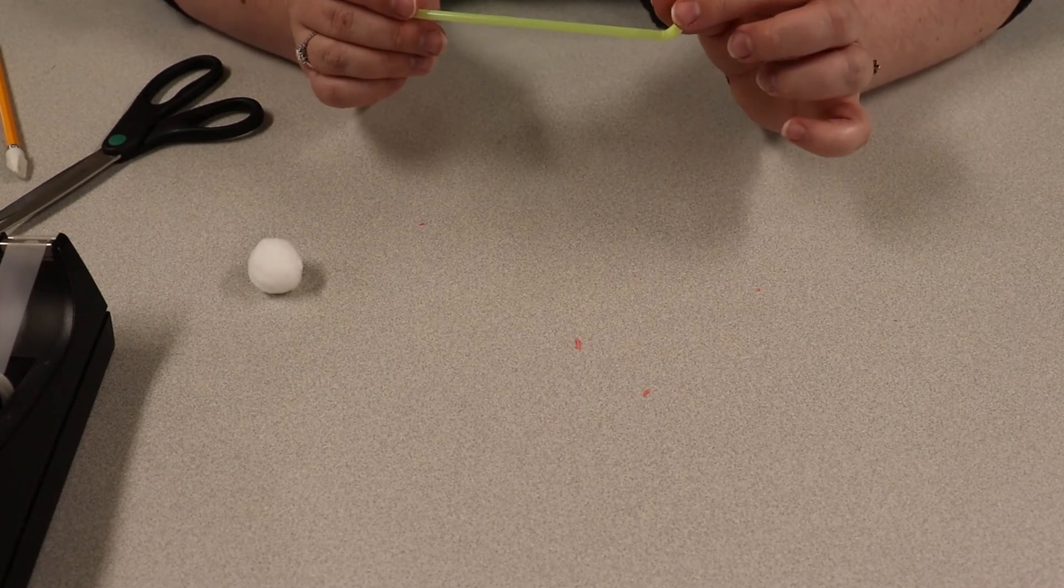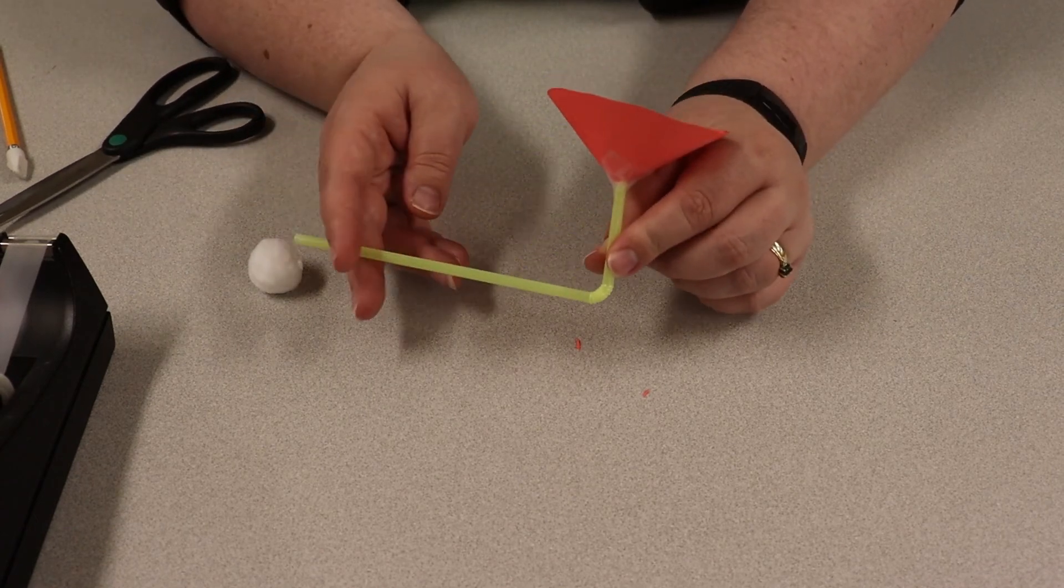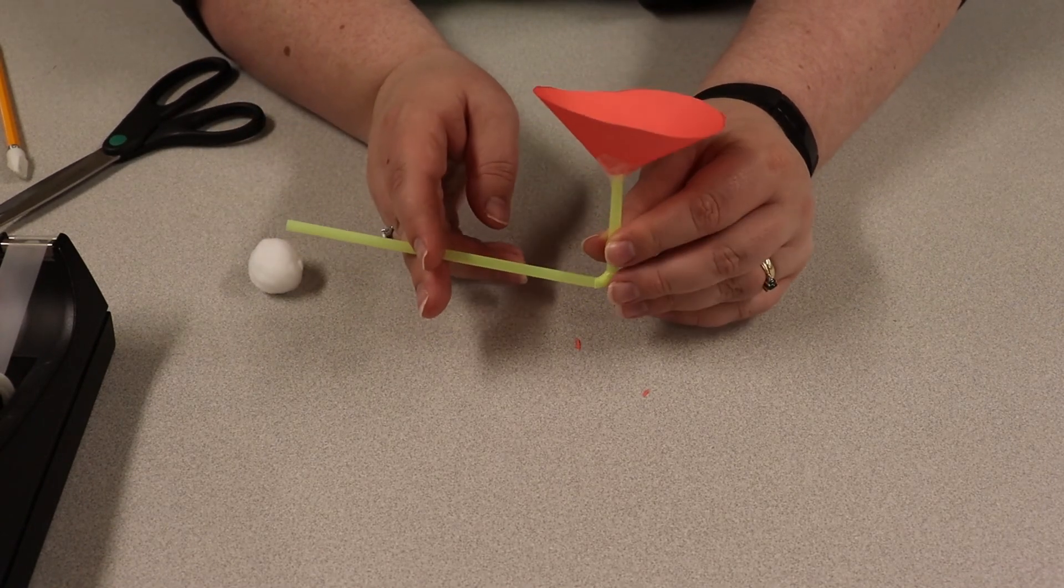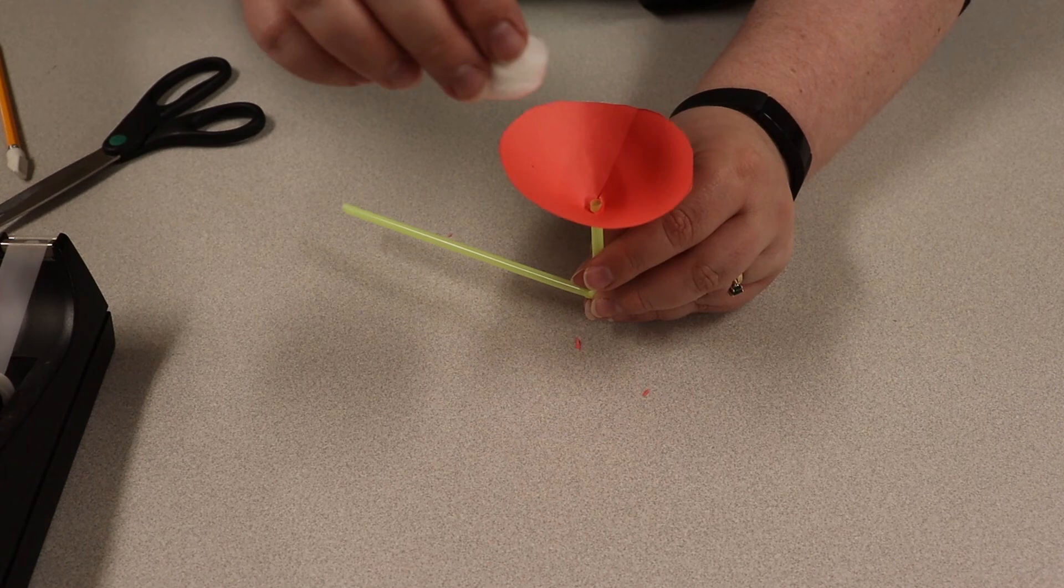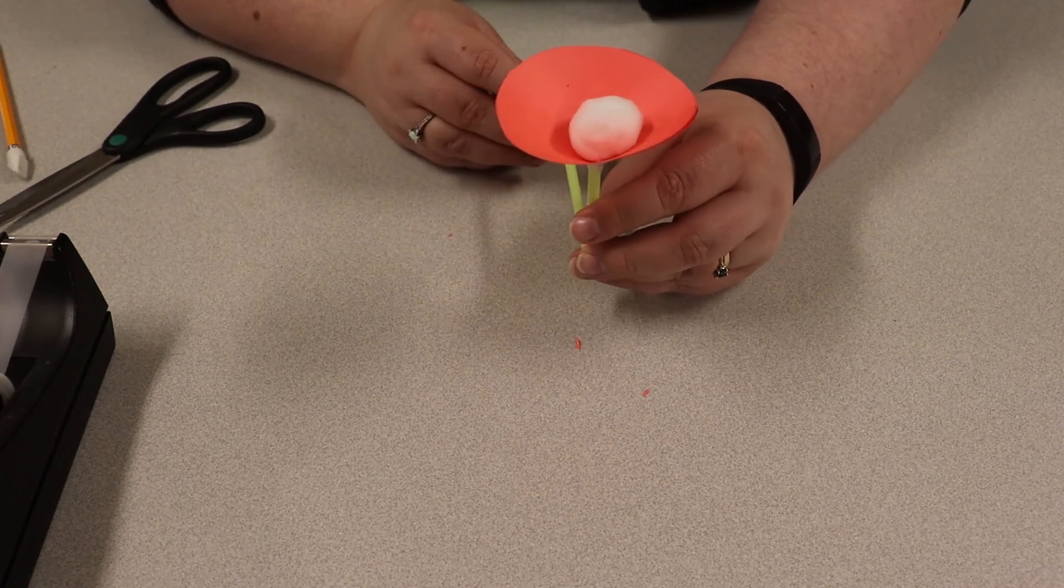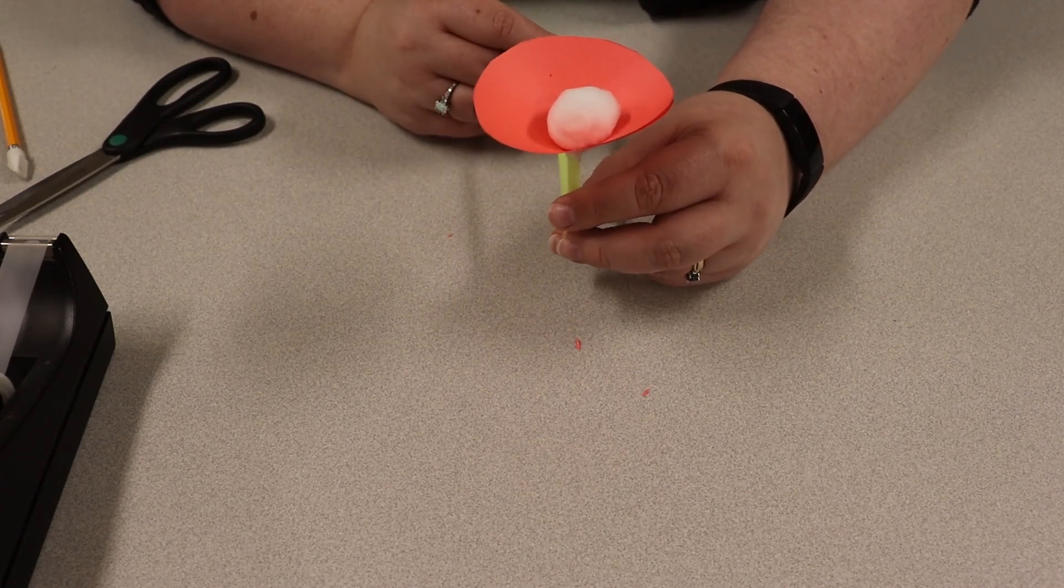Bendy straws are kind of the best here so that with that you can watch it as it goes. So we're gonna put our cotton ball in there and then you'll just blow on it and have it pop up.